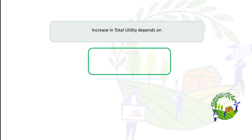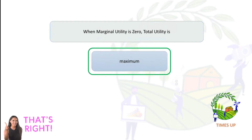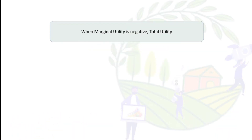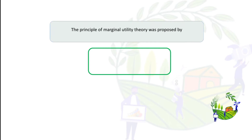An increase in total utility depends on marginal utility. When marginal utility is zero, total utility is at its maximum. When marginal utility is negative, total utility declines. The principle of marginal utility theory was proposed by Marshall.